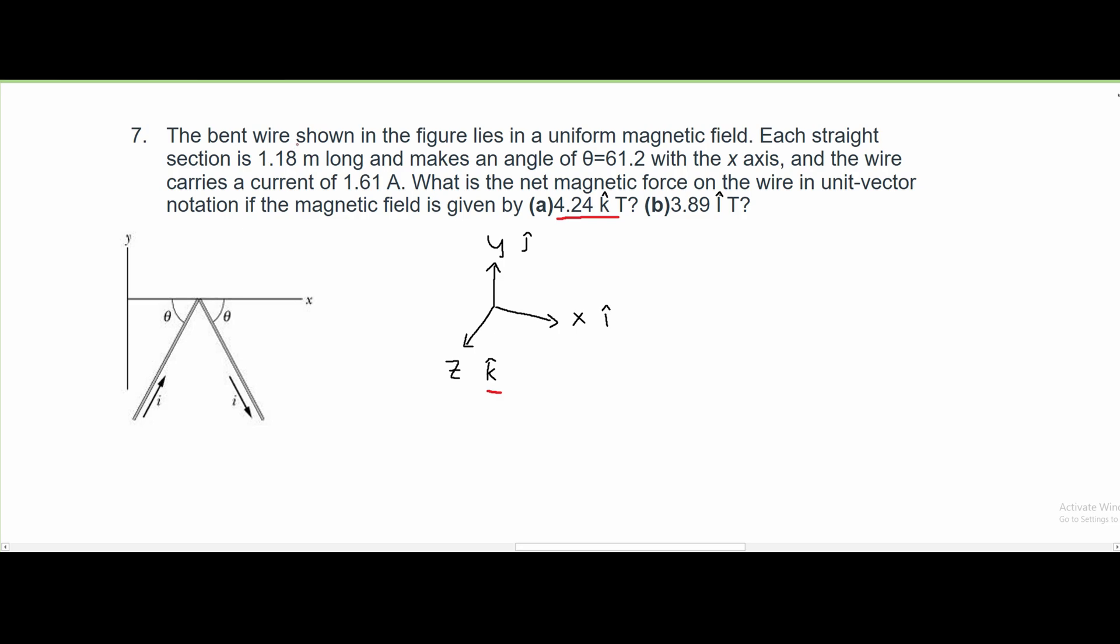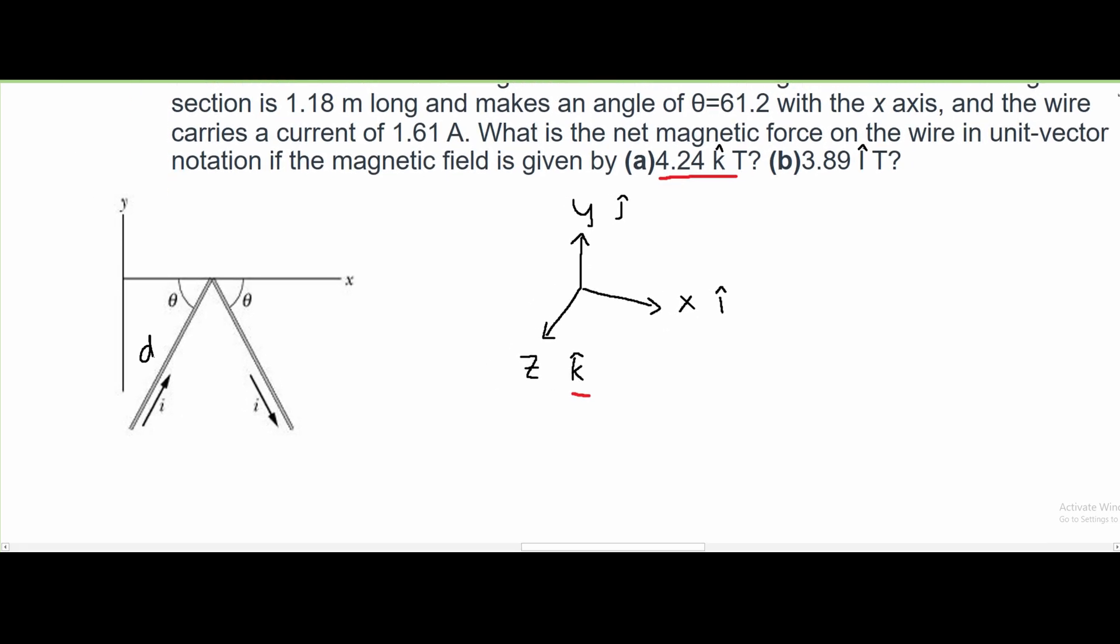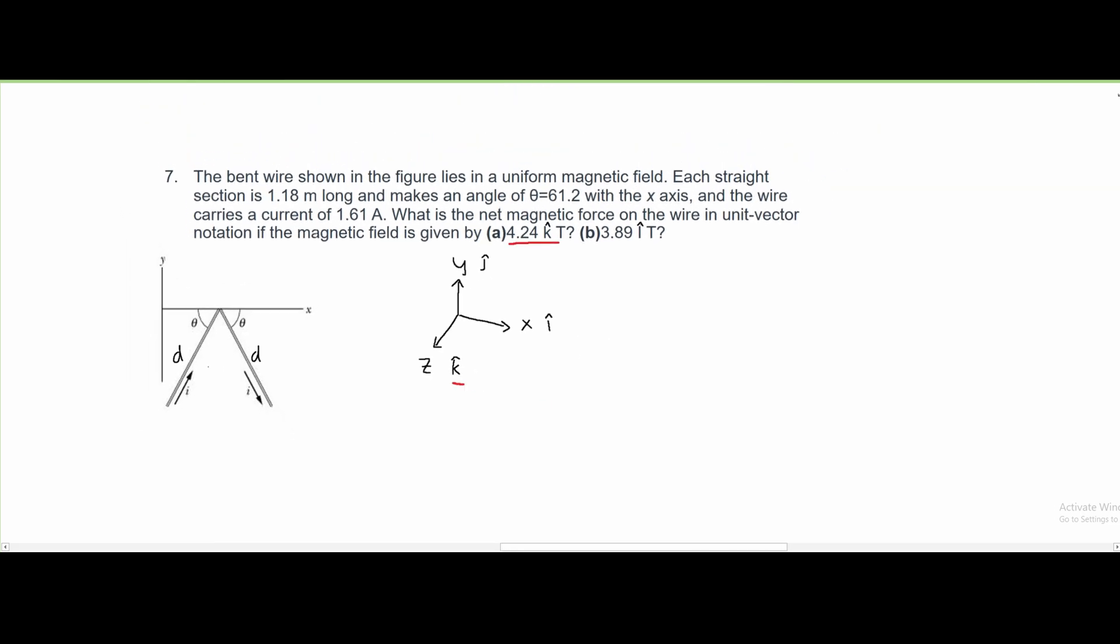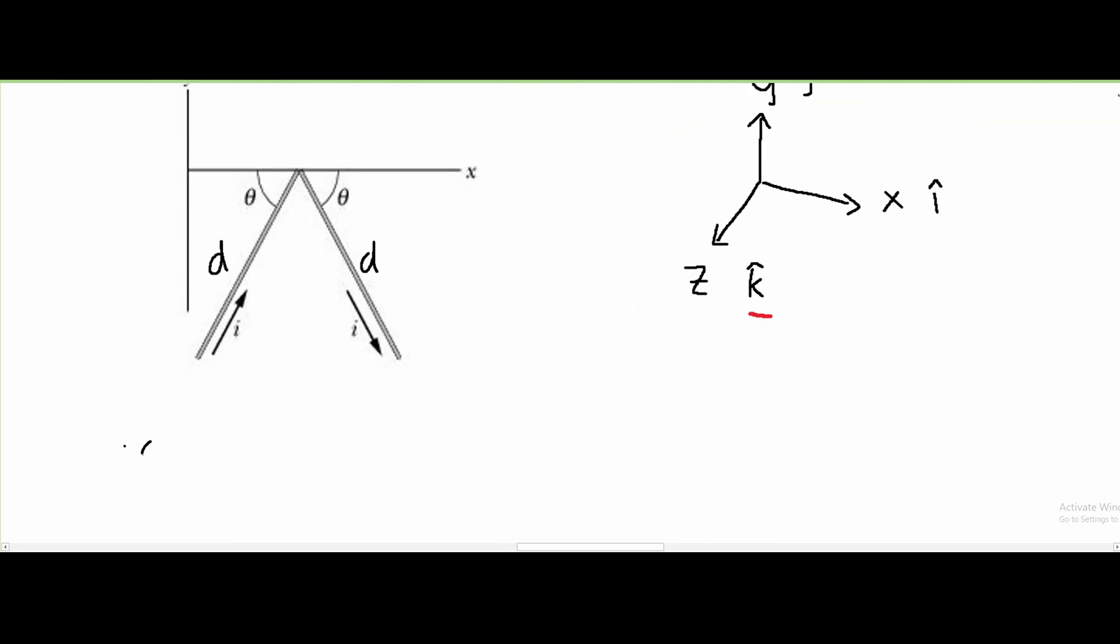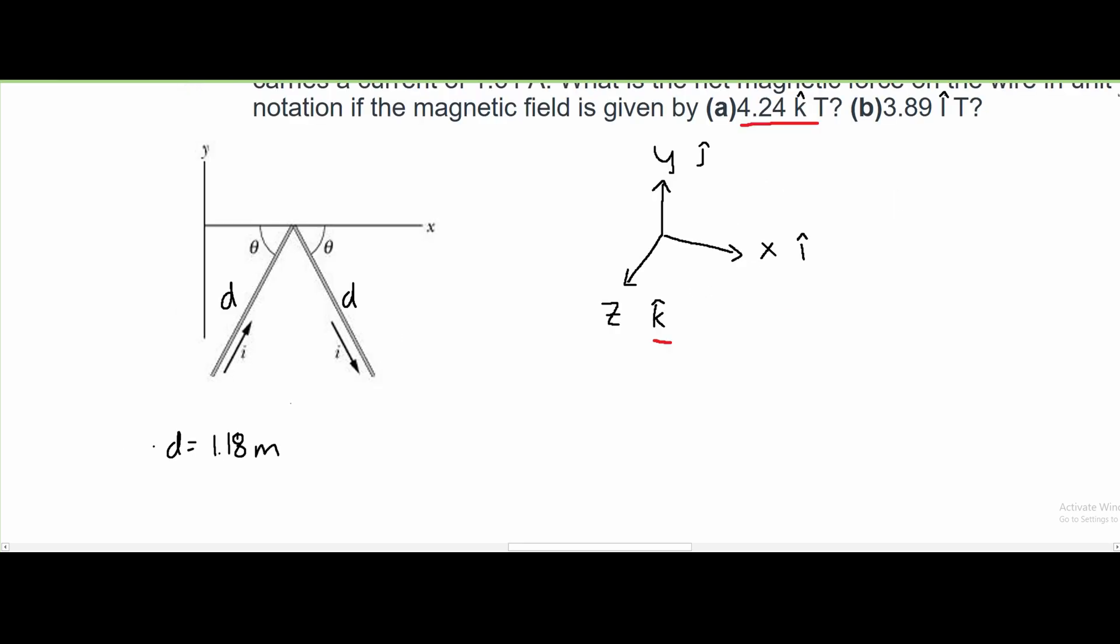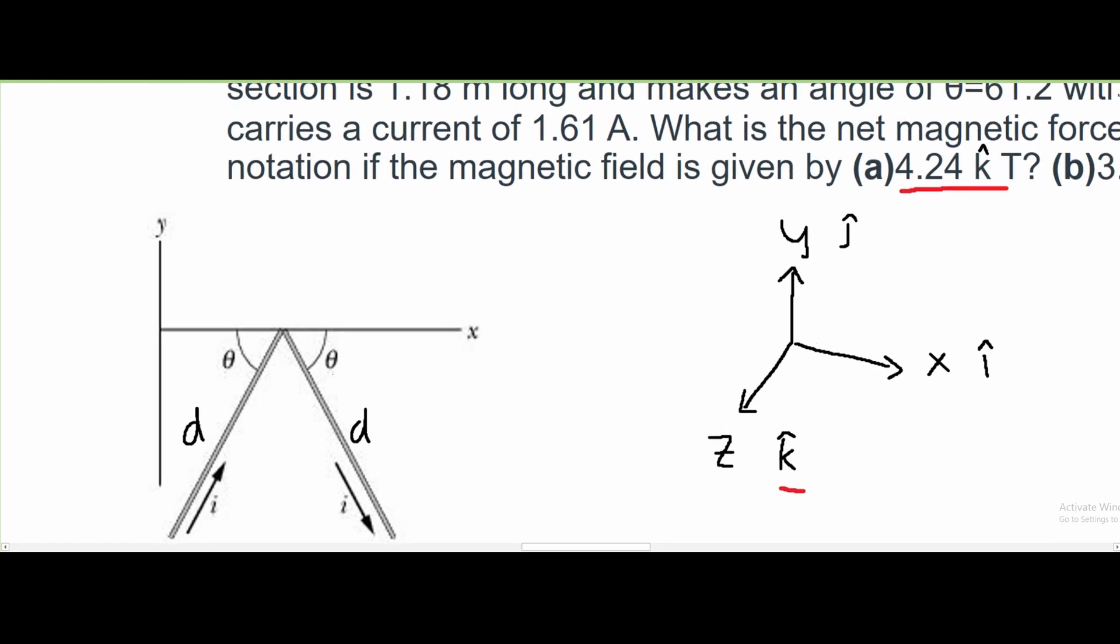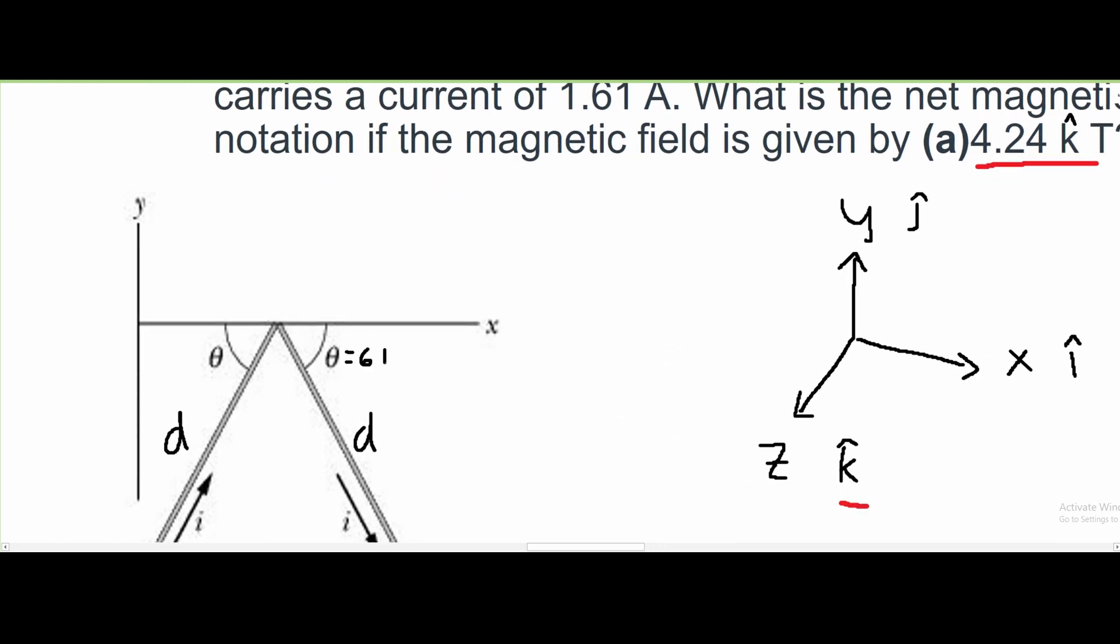Looking at the values we're given, each straight section is 1.18 meters long. We assign d equals 1.18 meters. We have our angle theta as 61.2 degrees, and these are both 61.2 degrees.